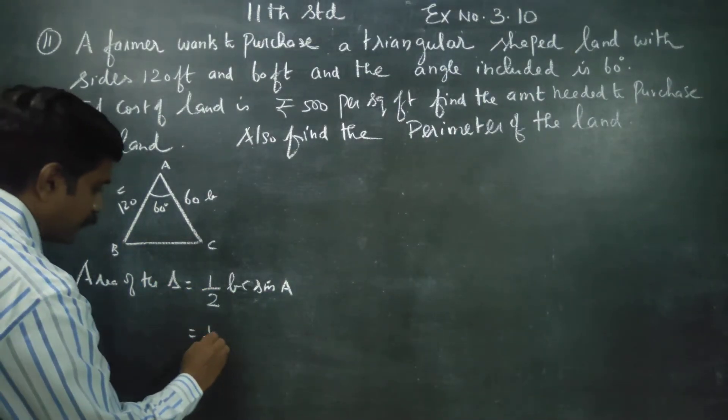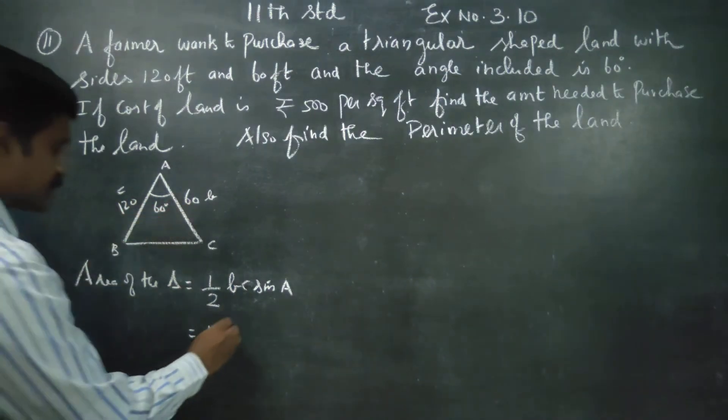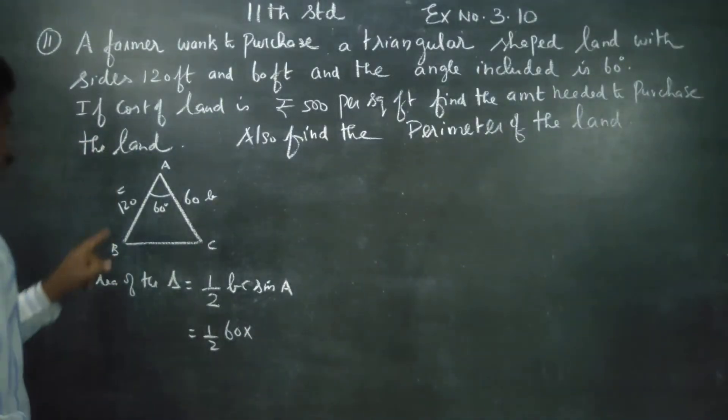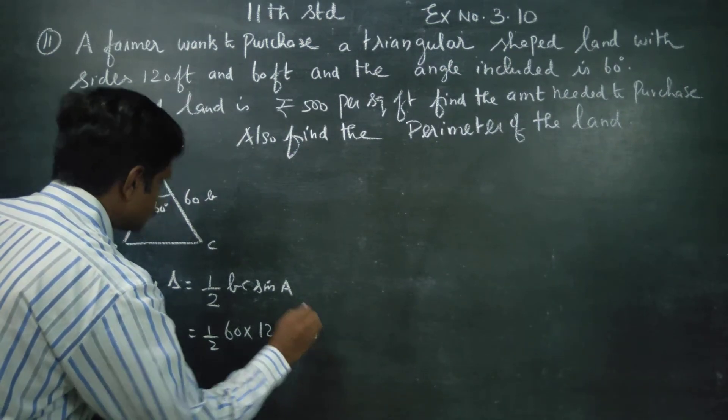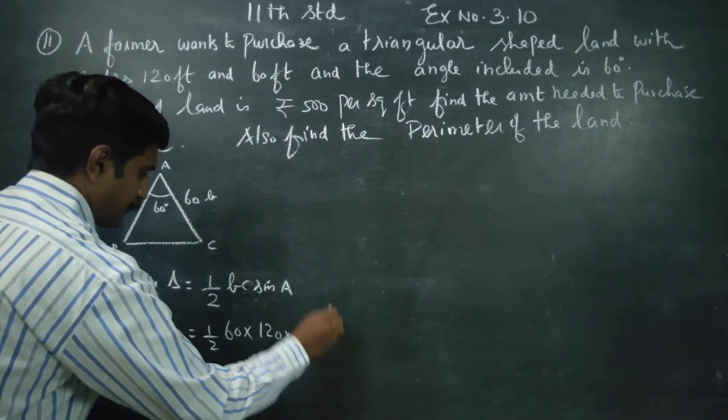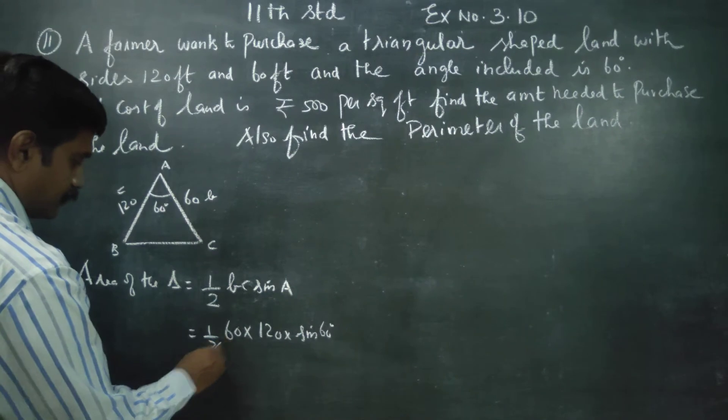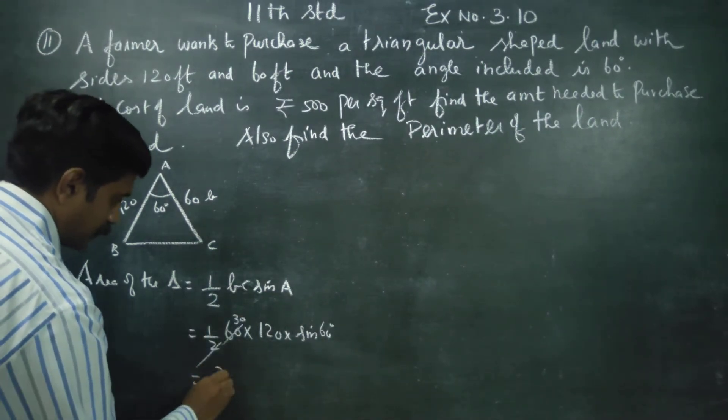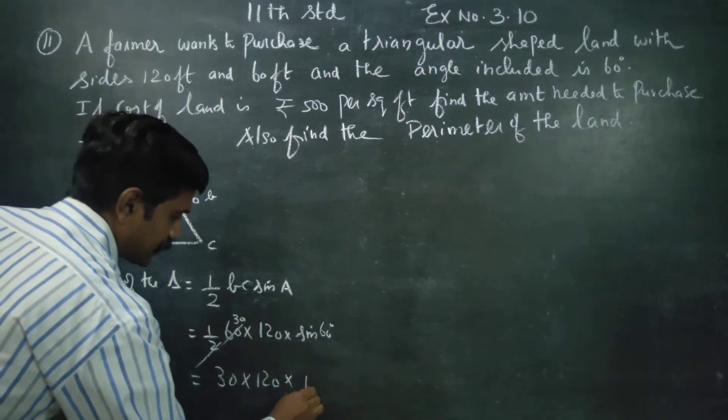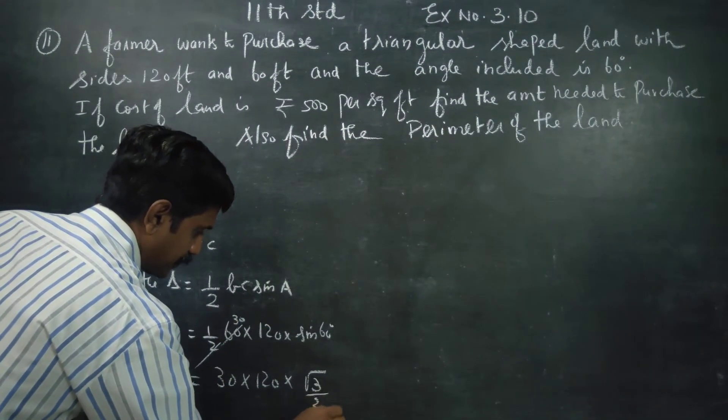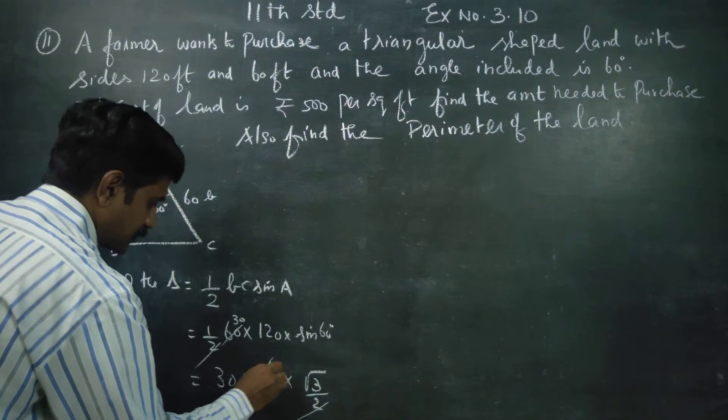Half of b - b would be 60, c would be 120, sin A - sin is 60 degrees. This is equal to 30 into 120 into sin 60, which is root 3 by 2.